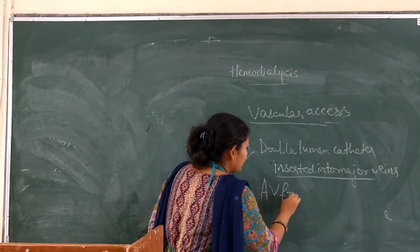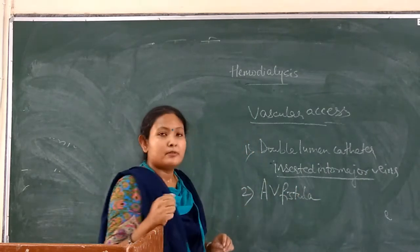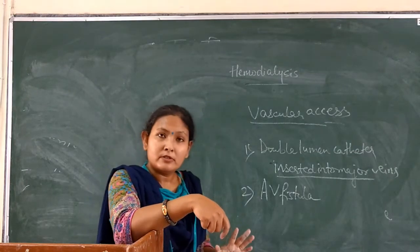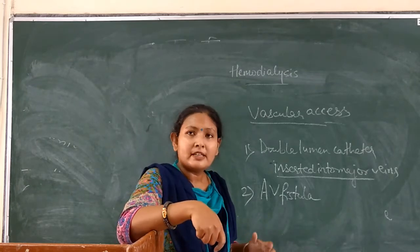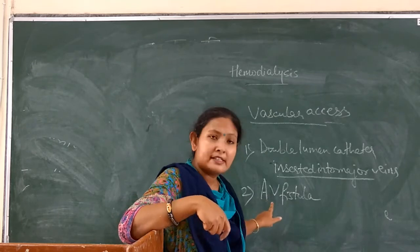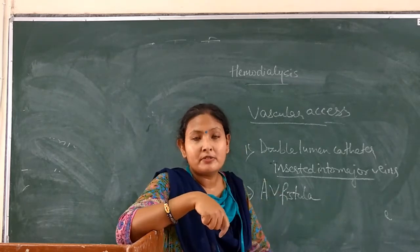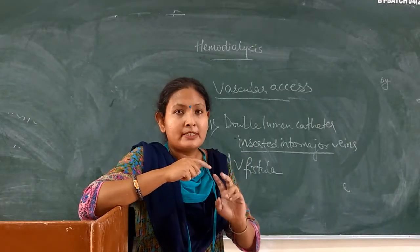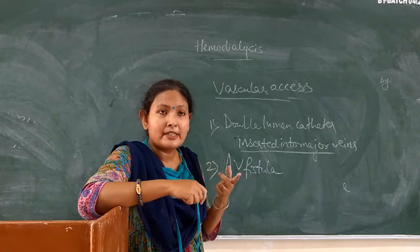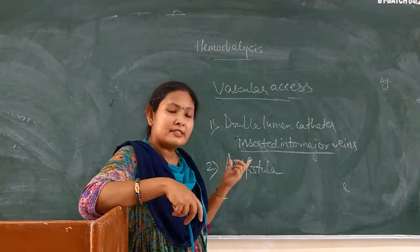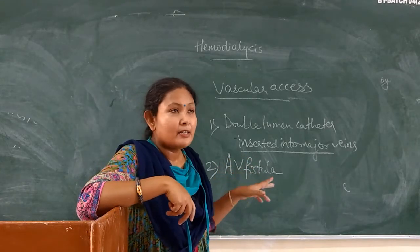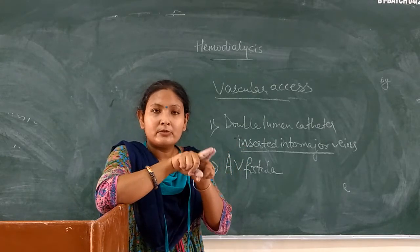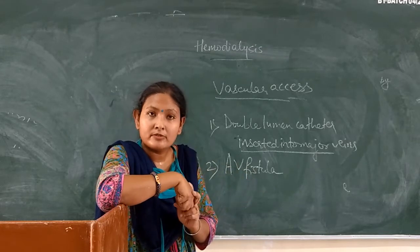Permanent vascular access is made with the help of an AV fistula. Chronic renal failure patients or end-stage renal disease patients who are on hemodialysis have an AV fistula. AV stands for arteriovenous fistula. A fistula means an abnormal connection between two body parts. So an AV fistula is an artificially created channel where the artery and vein are anastomosed — connected together — and that vascular access is used for hemodialysis.